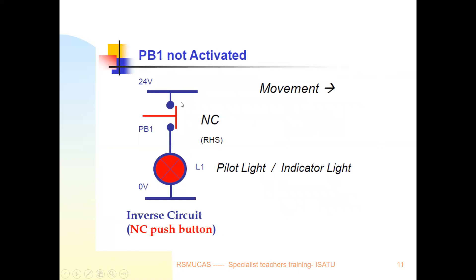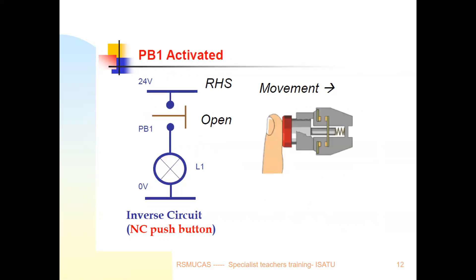In this circuit, the power supply is connected to the load through a normally closed switch. In most cases a lamp only lights when the switch is activated, but here, without activating the switch, the bulb is turned on. Activating the switch makes the bulb turn off. When you push the switch, instead of turning on, it turns off. This is what we call an inverter circuit, and it is often referred to as the NOT function.